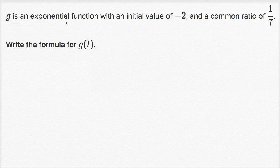G is an exponential function with an initial value of negative two and a common ratio of one-seventh. Write the formula for g of t.